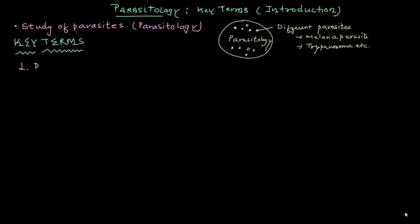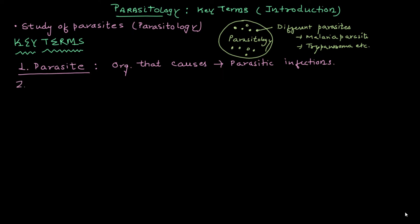The first key term we need to understand is parasite. What is a parasite? A parasite is an organism that can cause parasitic infections. There are different types of infections caused by parasites, including malaria. These organisms are called parasites.